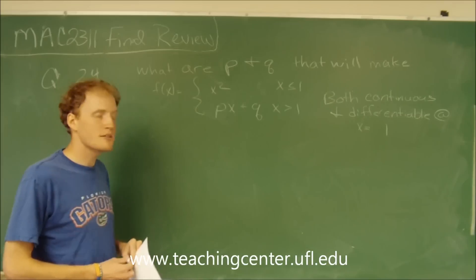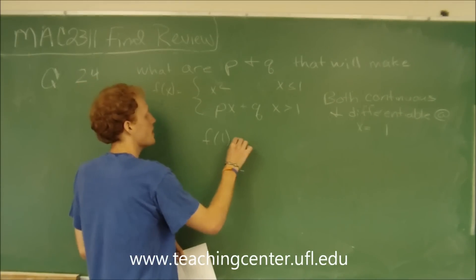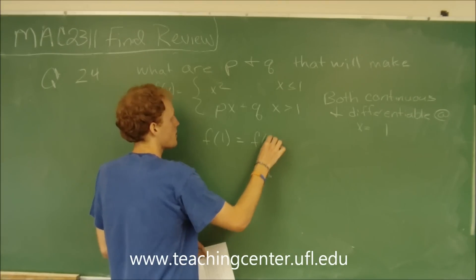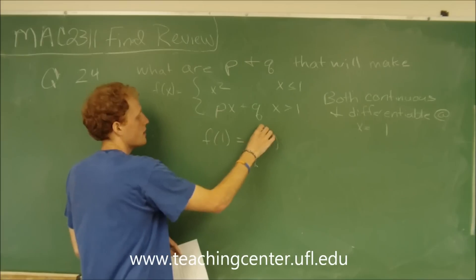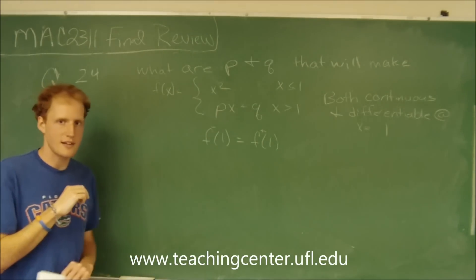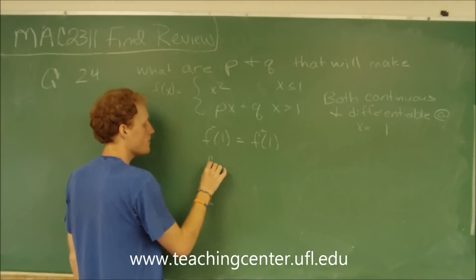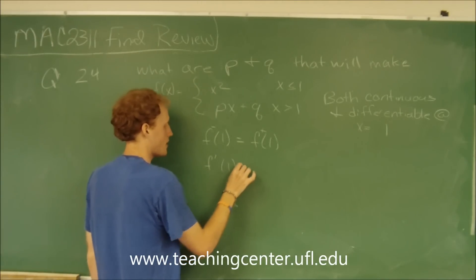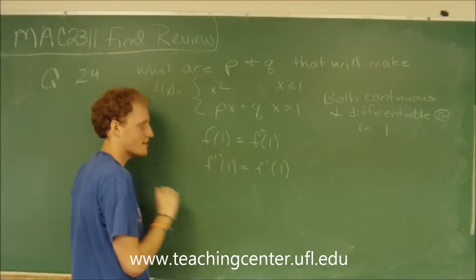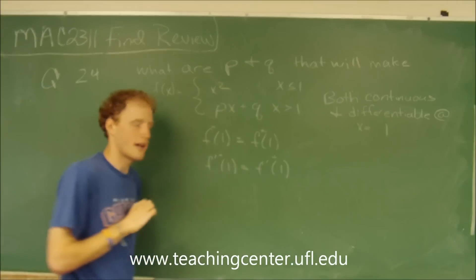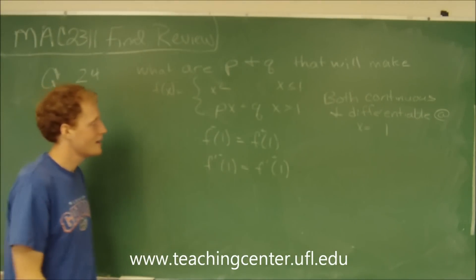For the function to be continuous, the function value at 1 from the right-hand side should equal the function value from the left-hand side. And for it to be differentiable, the derivatives must also equal each other — the derivative from the left-hand side should equal the derivative from the right-hand side.